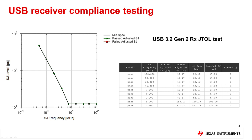The stress signal is transmitted by the BERT, or Bit Error Rate Tester, and received by the DUT — the device under test — which may be a host, hub, or device. It is then looped back and sent to the receiver of the BERT. Any corrupted data bits received are counted as an error and the bit error rate is calculated. The DUT must meet the defined BER for all test points to successfully pass this compliance test. A USB channel with poor signal integrity is more likely to fail the receiver jitter tolerance test as the probability of receiving corrupt bits is high.